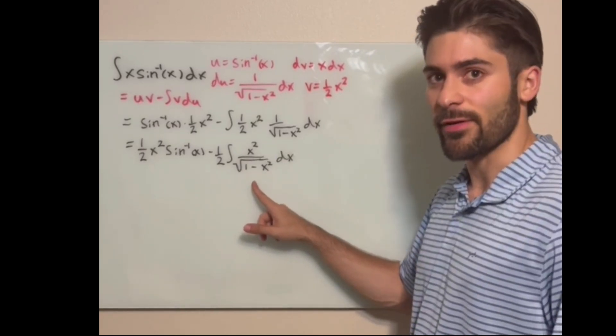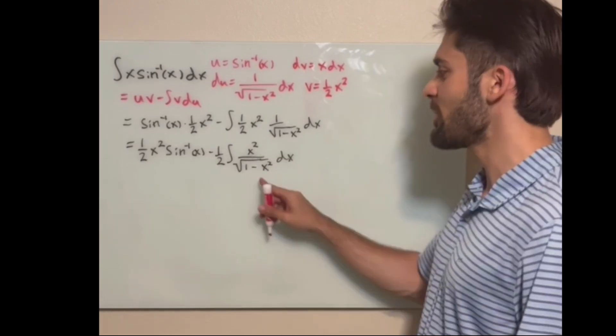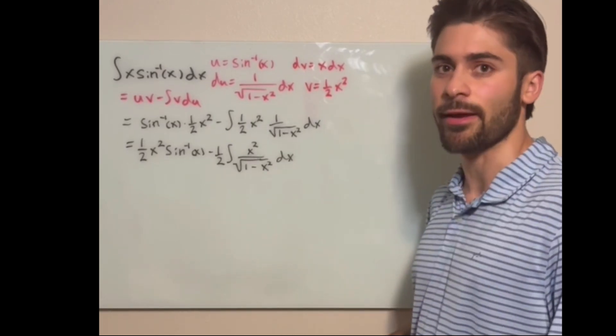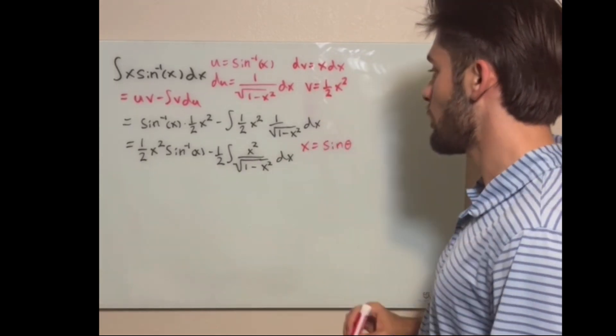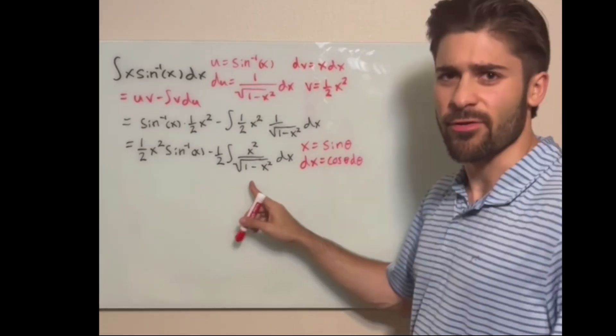If you notice, we have square root of 1 minus x squared in the denominator, which is one of the forms for a trigonometric substitution. And the appropriate substitution to make for x here is sine theta. Take the derivative and find dx. Then we can substitute those into the integral.